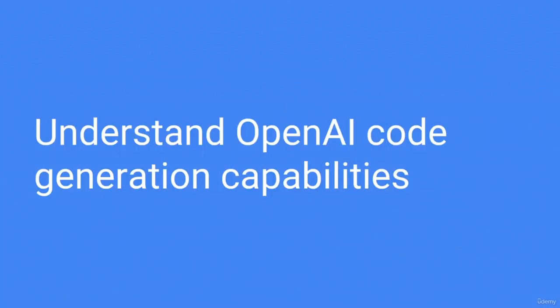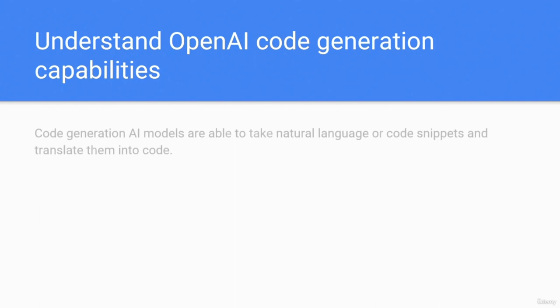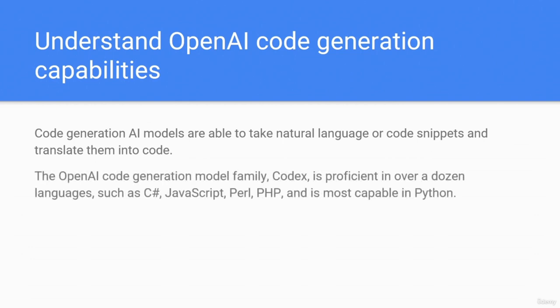Understand OpenAI code generation capabilities. Code generation AI models are able to take natural language or code snippets and translate them into code. The OpenAI code generation model family, Codex, is proficient in over a dozen languages such as C#, JavaScript, Perl, and PHP, and is most capable in Python.